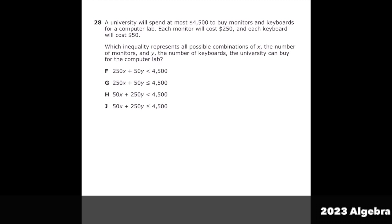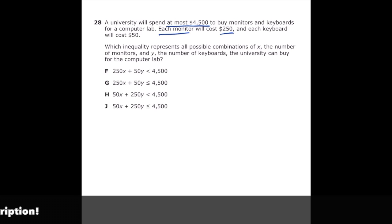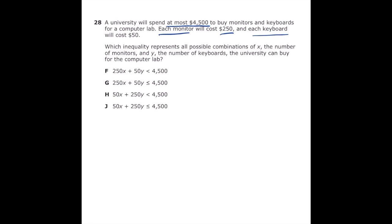This is number 28 from the 2022 Algebra 1 EOC. A university will spend at most 4,500 dollars to buy monitors and keyboards for a computer lab. Each monitor will cost 250 dollars and each keyboard will cost 50 dollars. Which inequality represents all possible combinations of x the number of monitors and y the number of keyboards the university can buy for the computer lab. The first thing I'm looking at is that each monitor will cost 250 dollars and they're represented by the letter x. So we're going to put 250 times x to start our inequality.